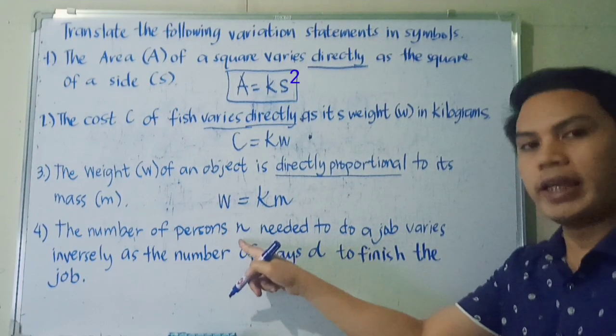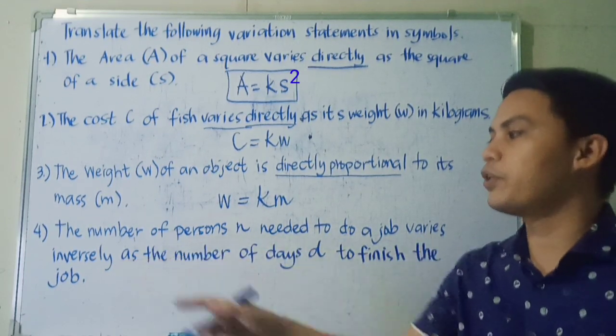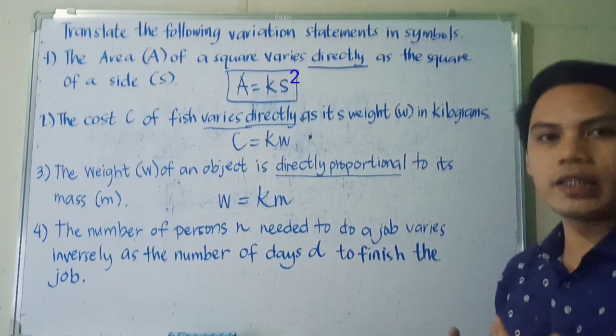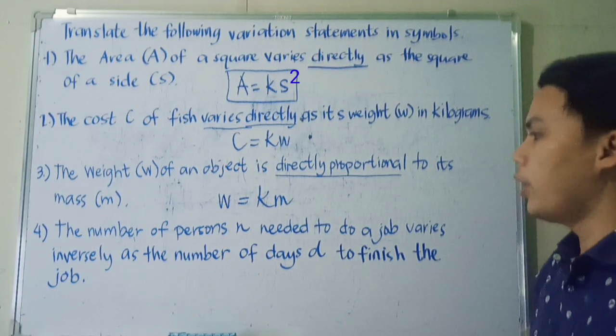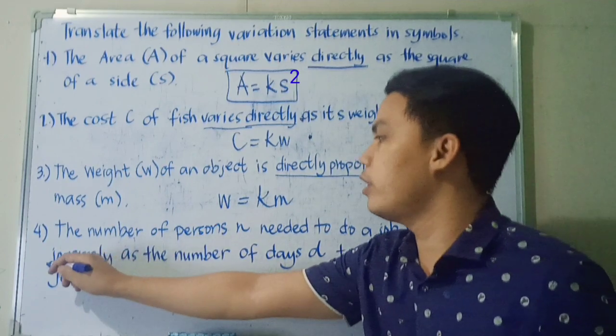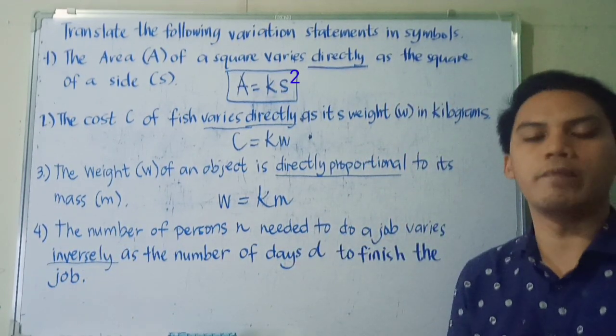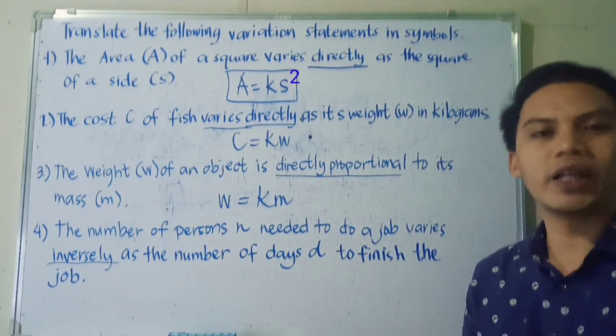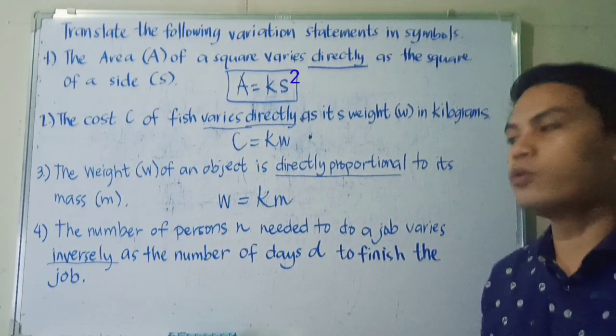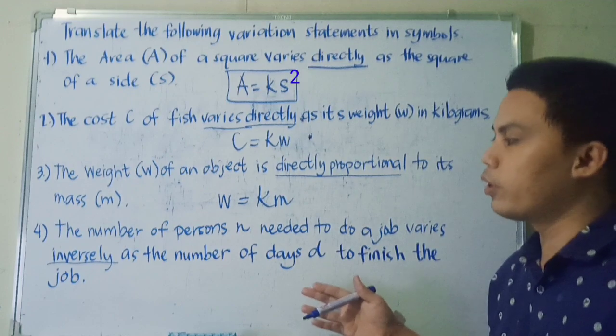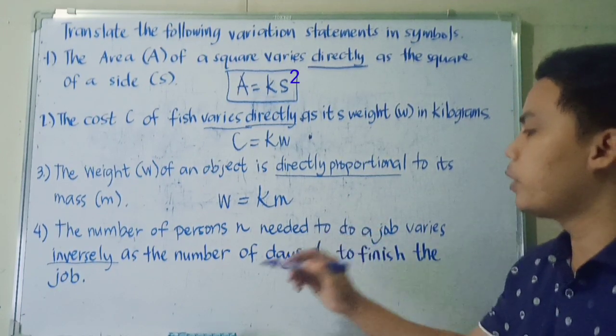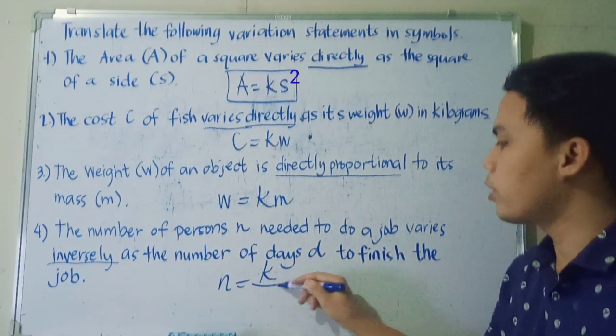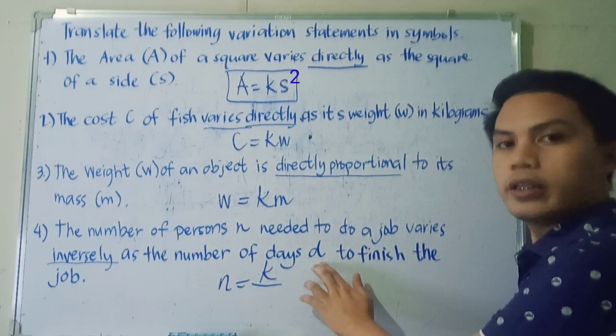Next, the number of persons N needed to do a job varies inversely as the number of days D to finish the job. So what kind of variation is number 4? We have inverse variation. So the keyword here is varies inversely. So again, for inverse variation, we have Y equals K over X. So we'll just replace Y and X depending on what terms or variables are given in our statement. So we have number of persons N that would be equal to K or constant over D, the number of days.